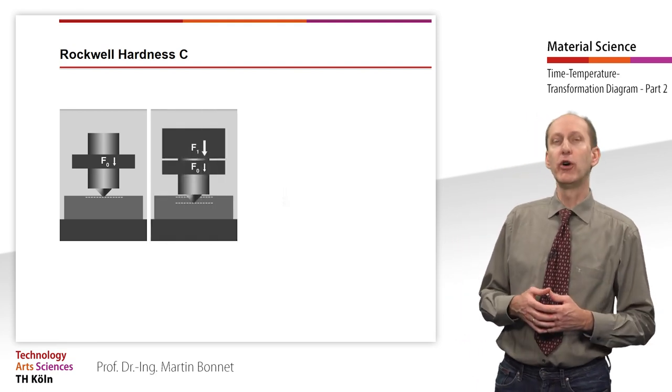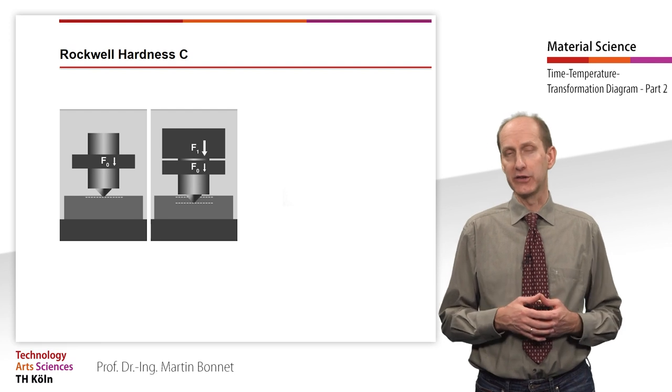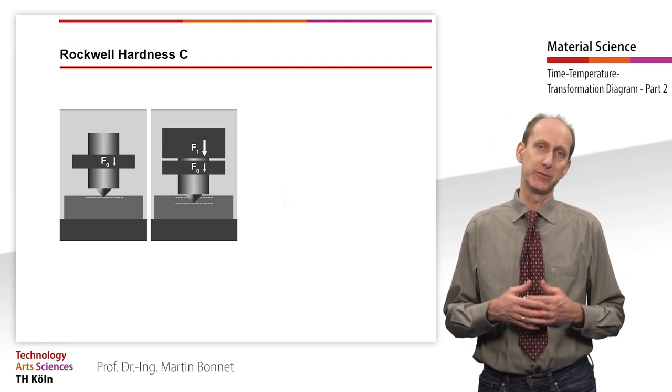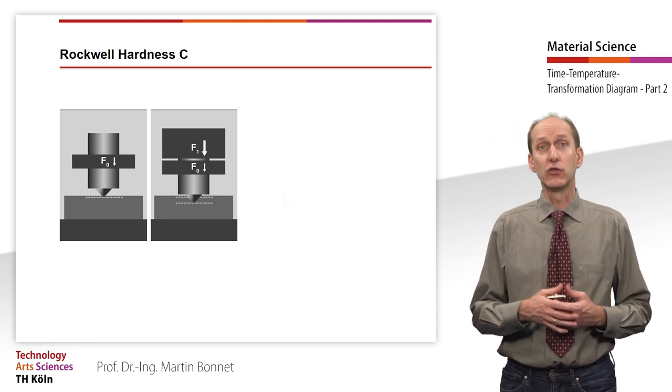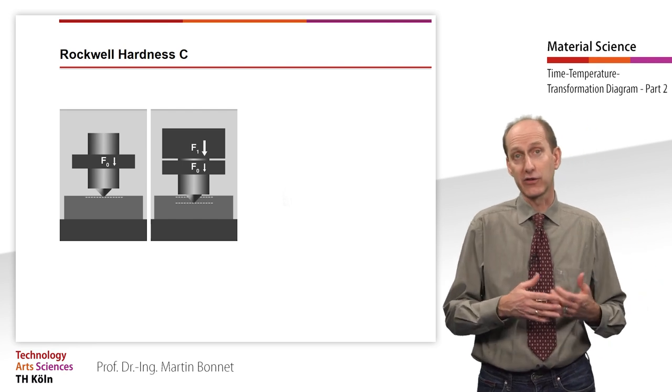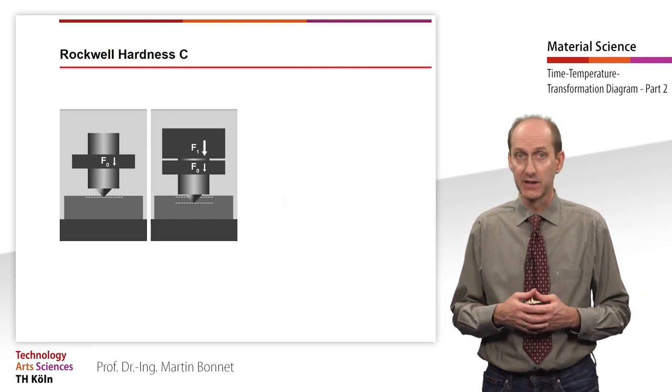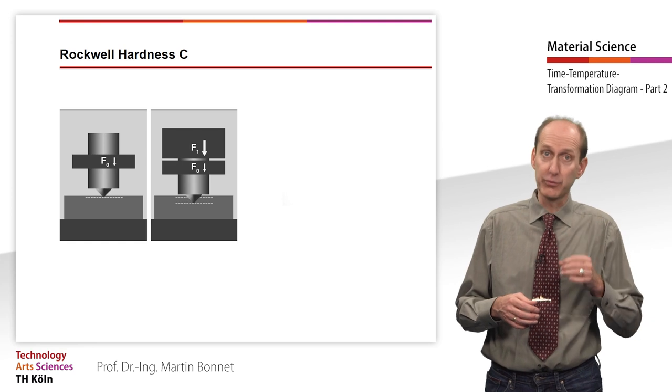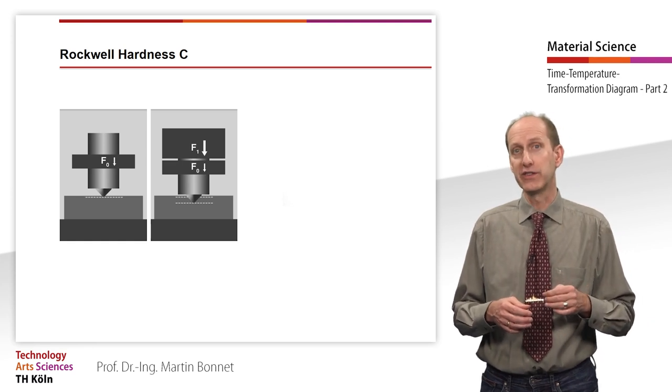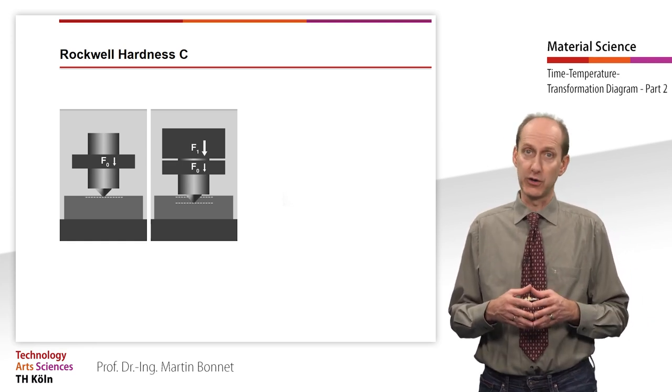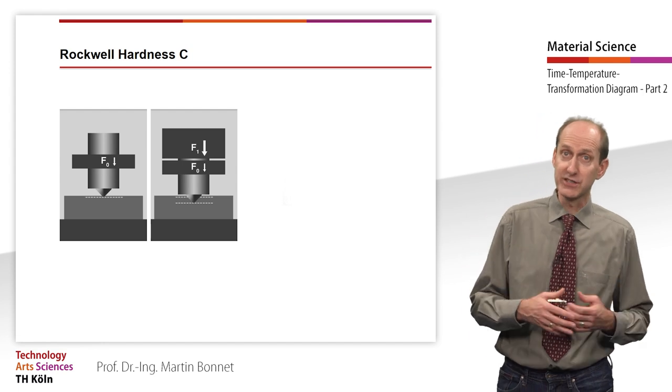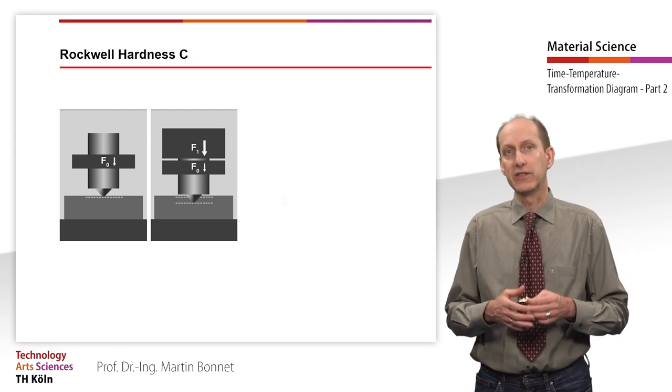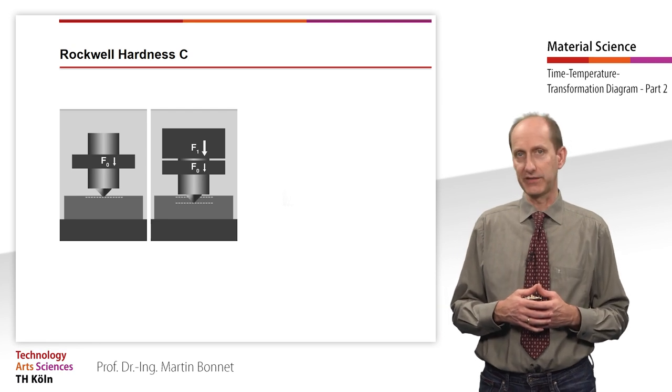A diamond cone with a point angle of 120 degrees is used as a test specimen. In order to compensate for the defects caused by an unclean surface, the indenter is first pressed into the surface with a test preload F0. The penetration depth generated by the preforce is the starting point for further testing.